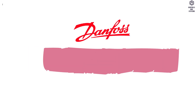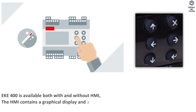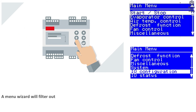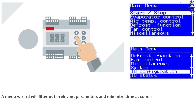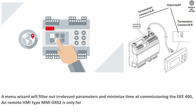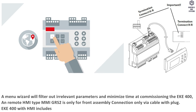HMI: the EKE400 is available both with and without HMI. The HMI contains a graphical display and 6 push buttons to operate and navigate through the menu system. A menu wizard will filter out irrelevant parameters and minimize time at commissioning the EKE400. In remote HMI, type MMI GRS2 is for front assembly connection only, via cable with plug.